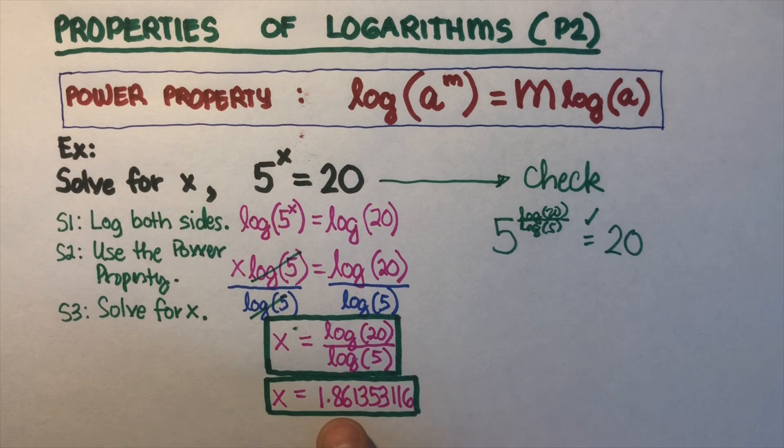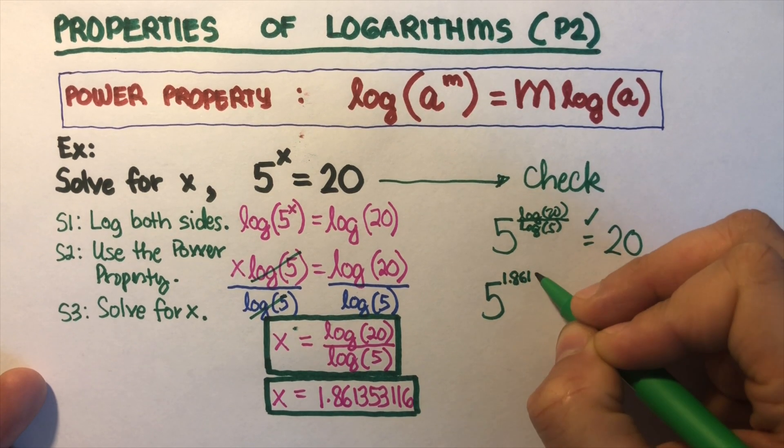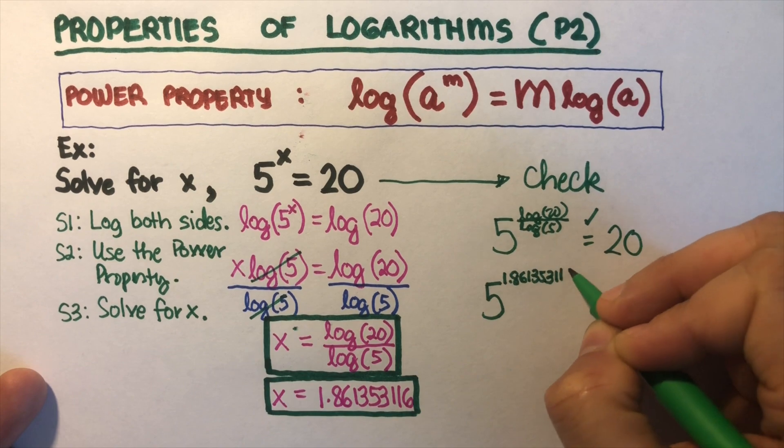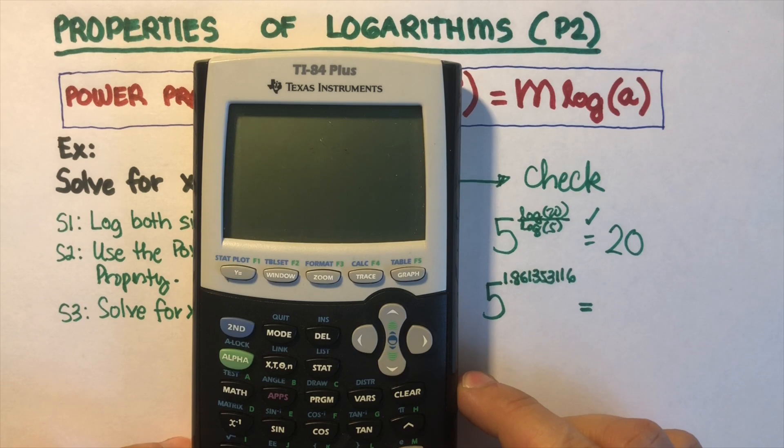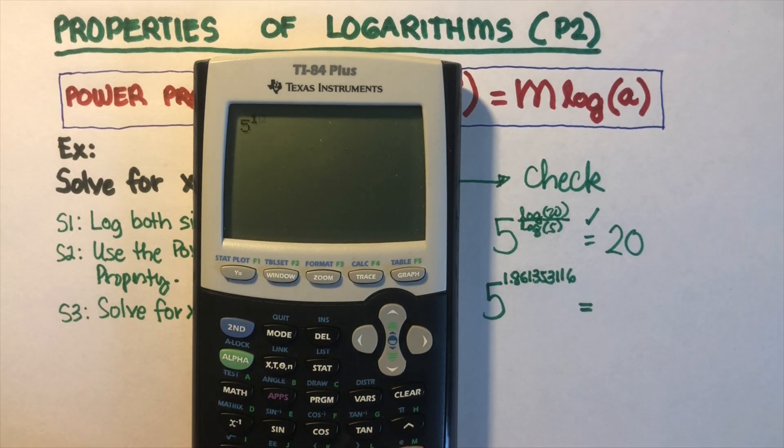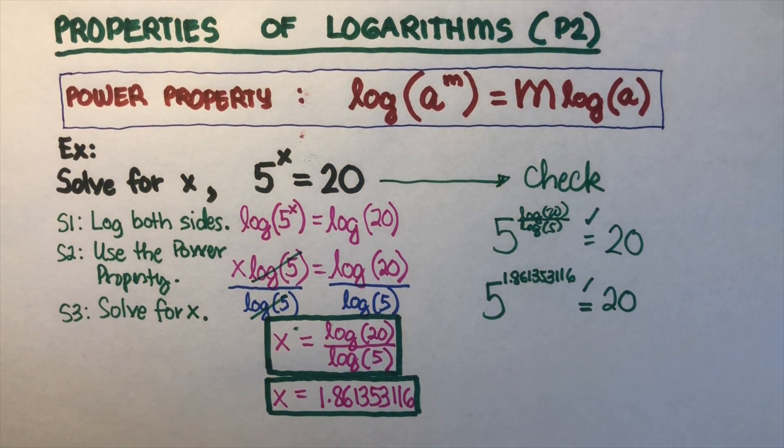Now let's use the other number here, the one that we got. So we can set it up 5 to the exponent 1.861353116. Let's see if that is equal to 20. So we type that in, 5 to the exponent 1.861353116. The answer is supposed to be 20. Let's see. And the answer is 20 right there. So our x value is correct. These two are correct answers.